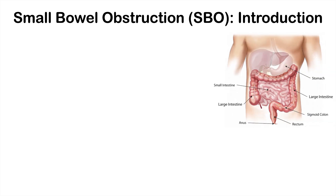So what is a small bowel obstruction? When we refer to the small bowel, we are referring to the small intestine. In this diagram here, if you were to swallow something, it goes down your esophagus into your stomach, and your stomach joins to the small intestine. The small intestine winds around within your abdomen, eventually leading to the large intestine and completing the gastrointestinal tract.